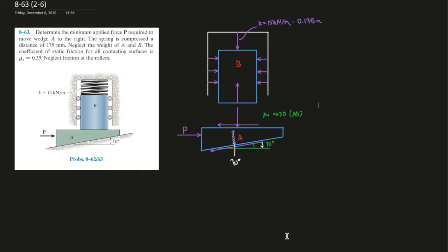Question 63 here, the sixth question in the second set of Chapter 8. It says, determine the minimum applied force P required to move the wedge A to the right. The spring is compressed a distance of 175 mm, which is 0.175 meters, and neglect the weight of A and B.